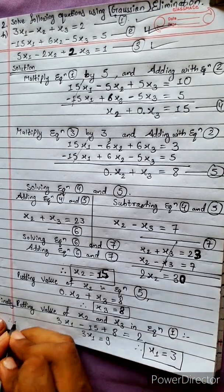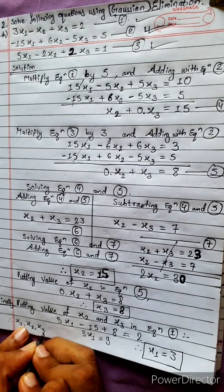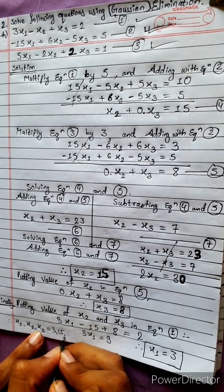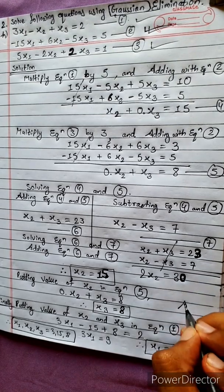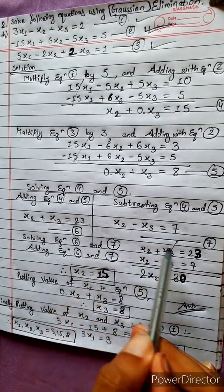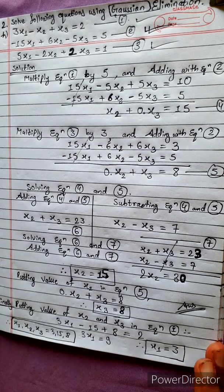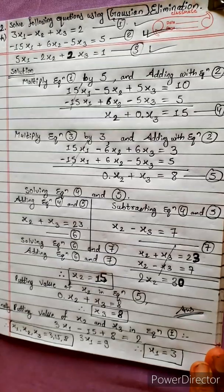So x1 equals 3, x2 equals 15, x3 equals 8. We got the right answer. Now next question, bye bye.